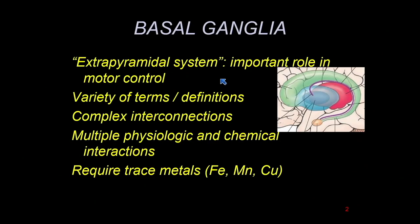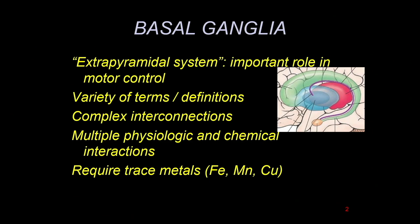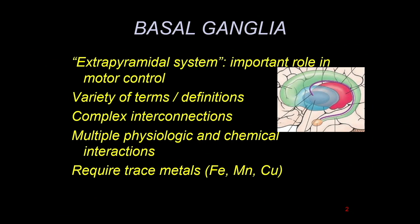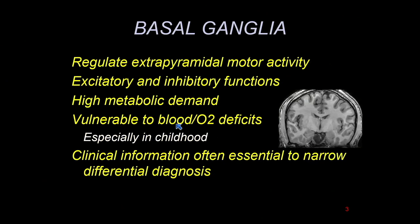The basal ganglia, the so-called extrapyramidal system, has an extremely important role in motor control — controlling what our motor cortex wants to execute. It modulates movement so that motions are carried out in a smooth, effective fashion. There are a lot of interconnections that give rise to this. It's easy to think about the corticospinal tract: I initiate a movement and this hand moves. But what goes on for that to occur in a fraction of a second is a lot. These are very highly metabolic structures, and so they're susceptible to certain insults, especially in childhood.